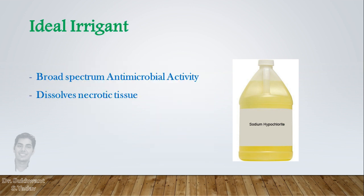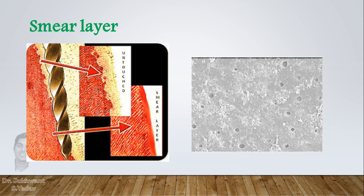The ideal irrigant should have antimicrobial property and tissue dissolving capacity. Sodium hypochlorite fulfills both of these, but during canal preparation when we do filing, a mixture of tissue debris and dentinal chips makes a smear layer over the canal walls. Sodium hypochlorite cannot dissolve dentinal chips and is unable to reach dentinal tubules for disinfection.